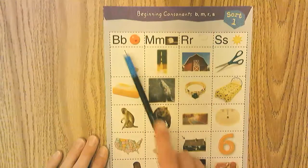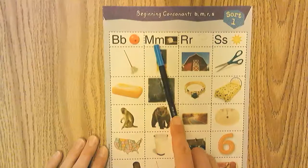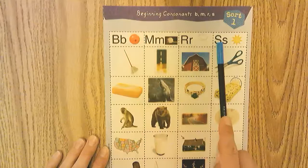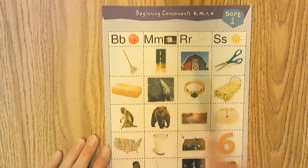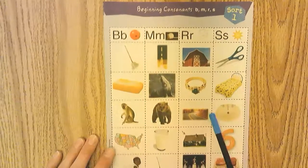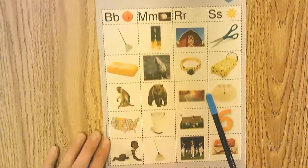So B as in ball, M as in mouse, R as in rain, S as in sun. All these words are mixed here. We're going to cut them up and put them in the correct categories on the next page. Let's first read them together.